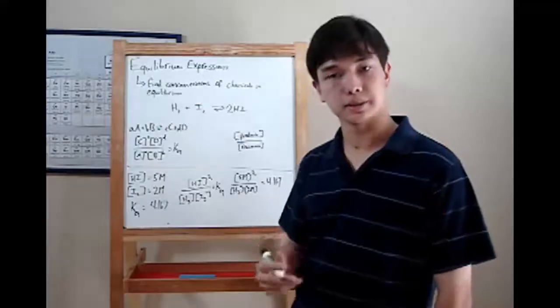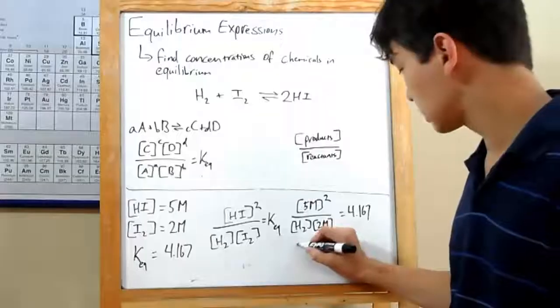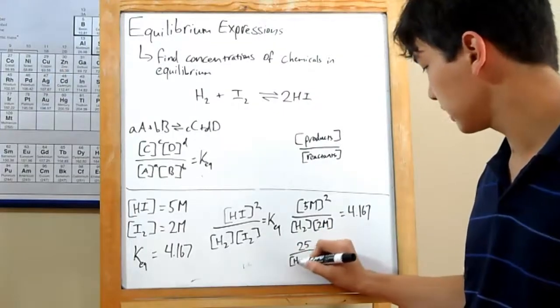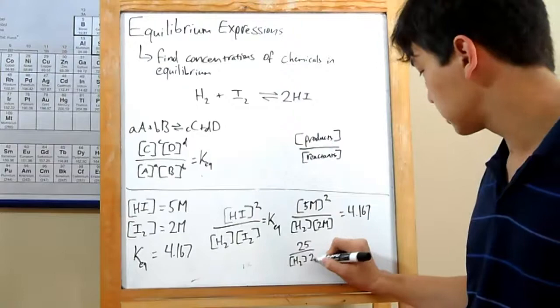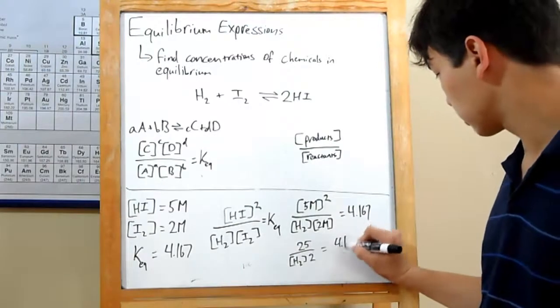Now all we have to do is solve. 5 squared is 25 over a concentration of H2 times 2, equals 4.167.